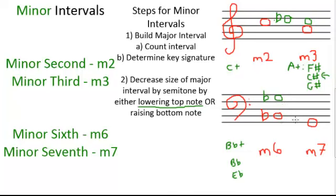We'll do one more example: the minor seventh. We count up seven from our G, and we end up with an F. We take the key signature of the bottom note, which is a G, meaning G major. G major has one sharp, and that's an F sharp. Now, we know that if we want to have a major seventh, we would write in that F sharp. However, since our next step is to lower that top note by a semitone, instead of writing in that F sharp and then erasing it right away, we're just going to write in the F, and then we have our minor seventh.